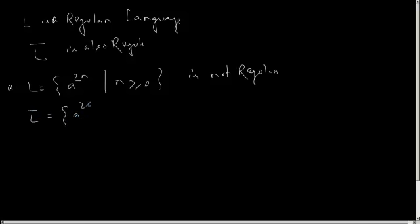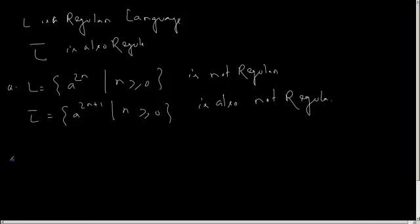Then L-bar, which is a to the power 2n plus 1 for n greater than or equal to 0, is also not regular. All words of 'a' containing an odd number of a's is the complement of all words with an even number of a's, and hence L-bar is also not regular. So if the exam question asks you to prove that L = a to the power 2n plus 1 is not regular, you can either prove it through pumping lemma, or prove that a to the power 2n is not regular and then apply the closure property.